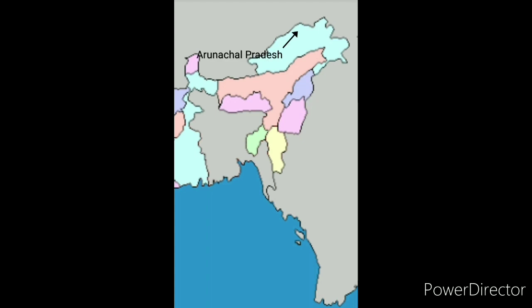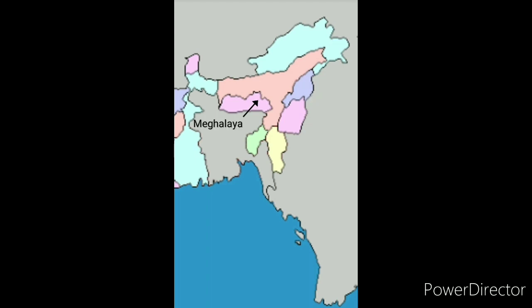Above Manipur is Nagaland and its capital is Kohima. Above Nagaland we have Arunachal Pradesh at the top and its capital is Itanagar. Then we have Assam and its capital is Dispur. Below Assam we have Meghalaya and its capital is Shillong.